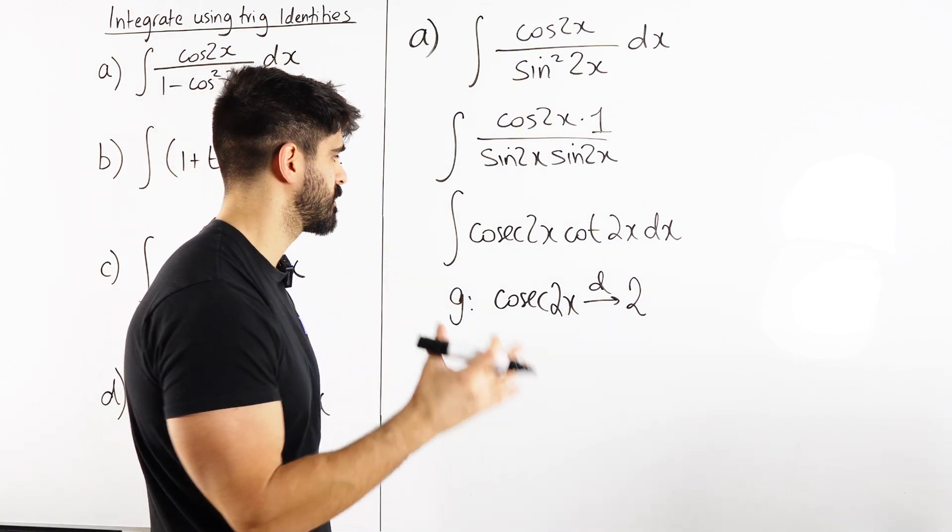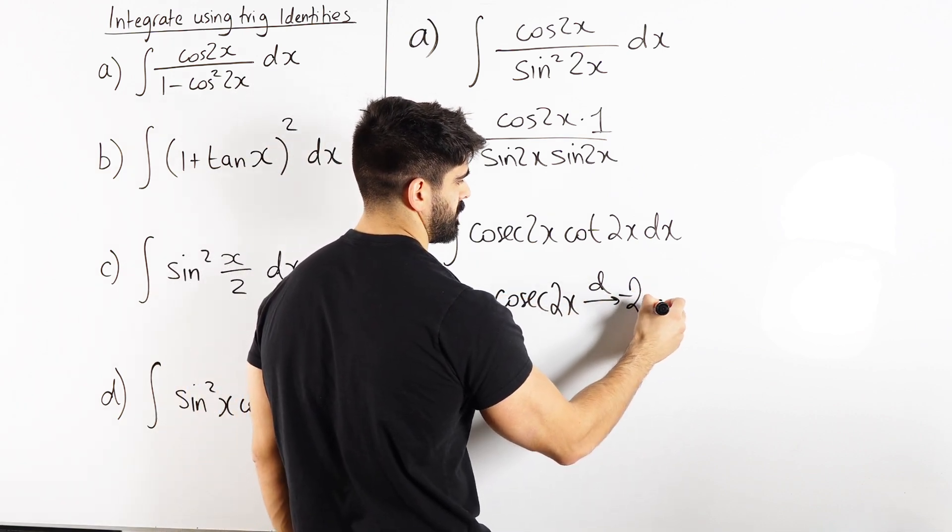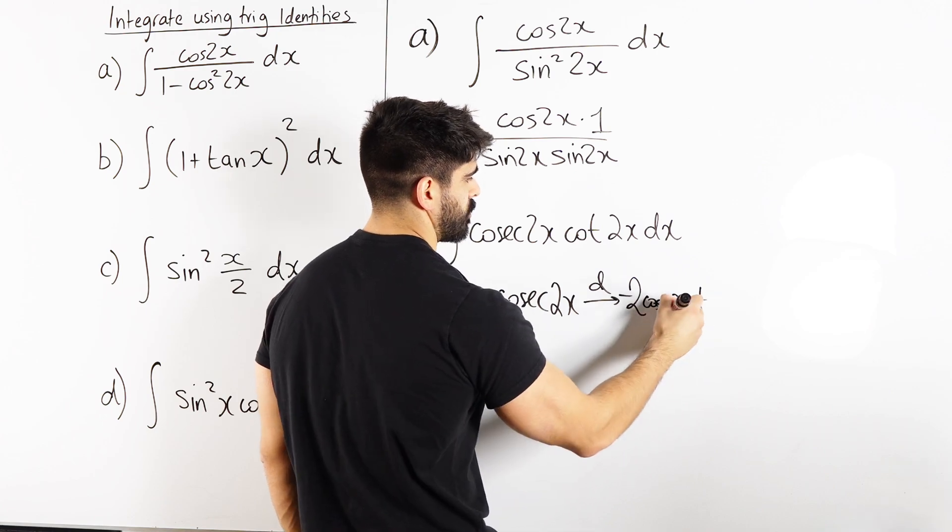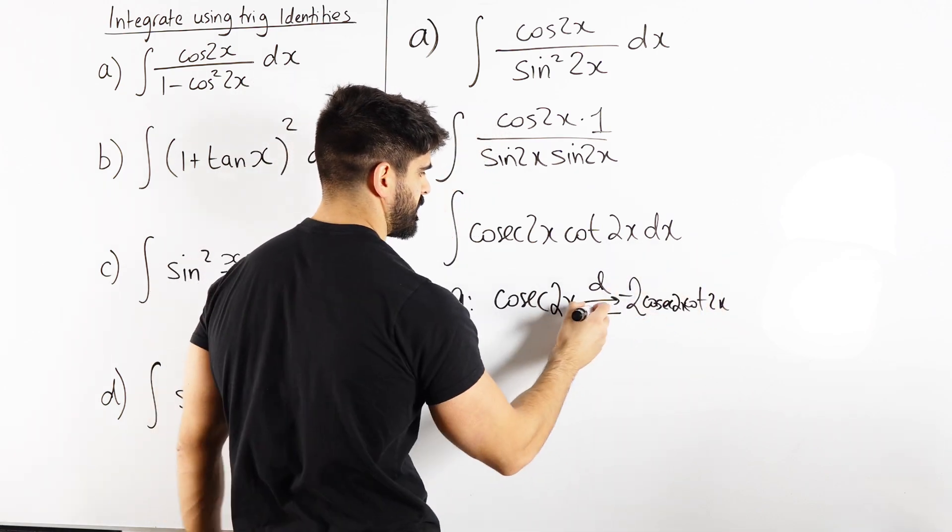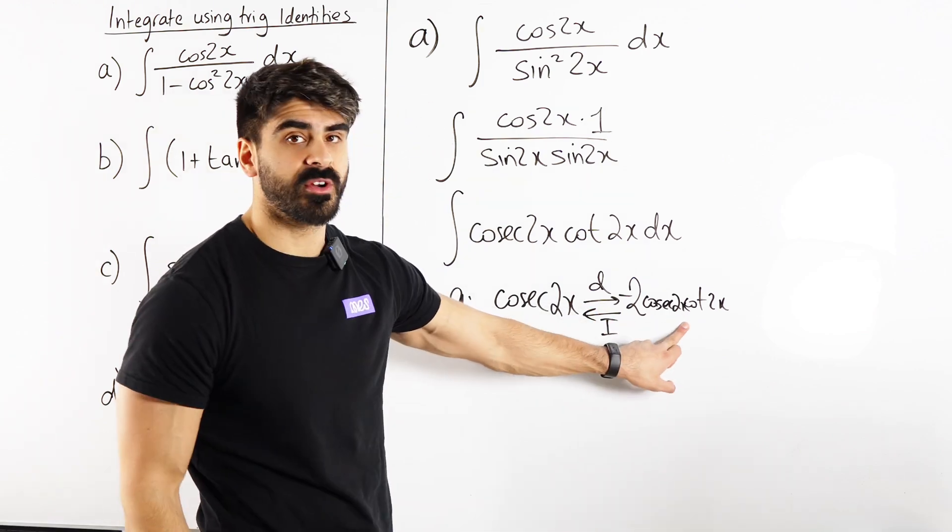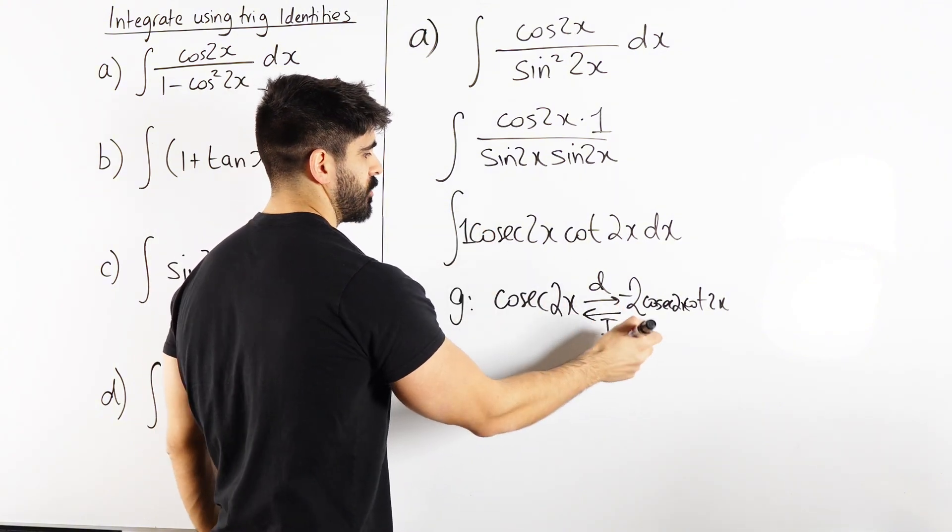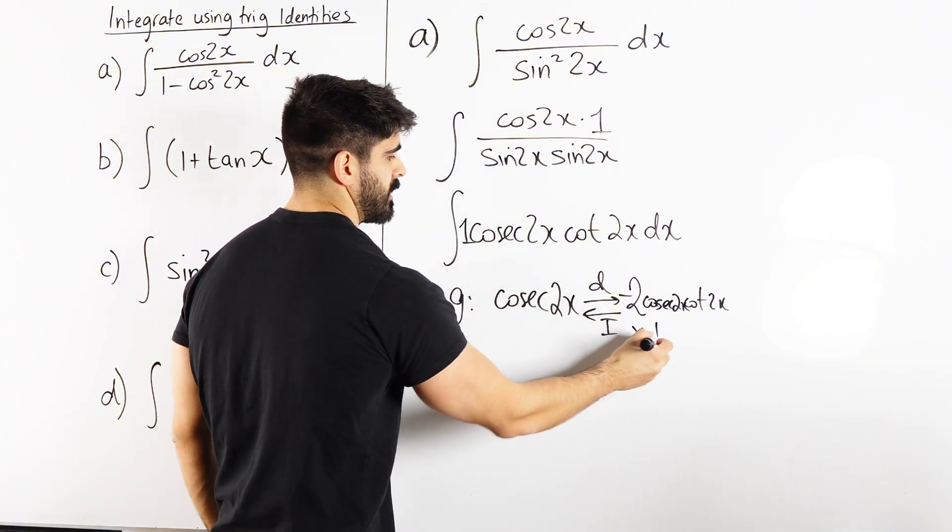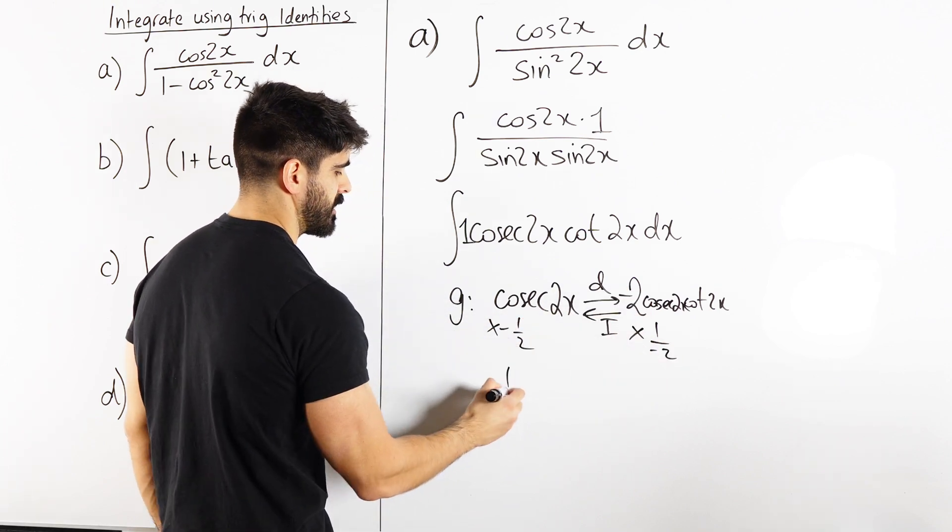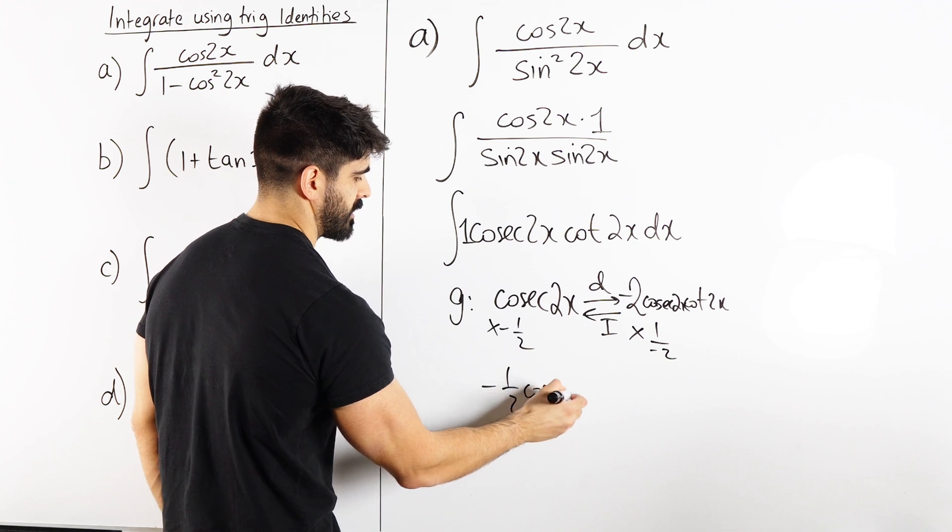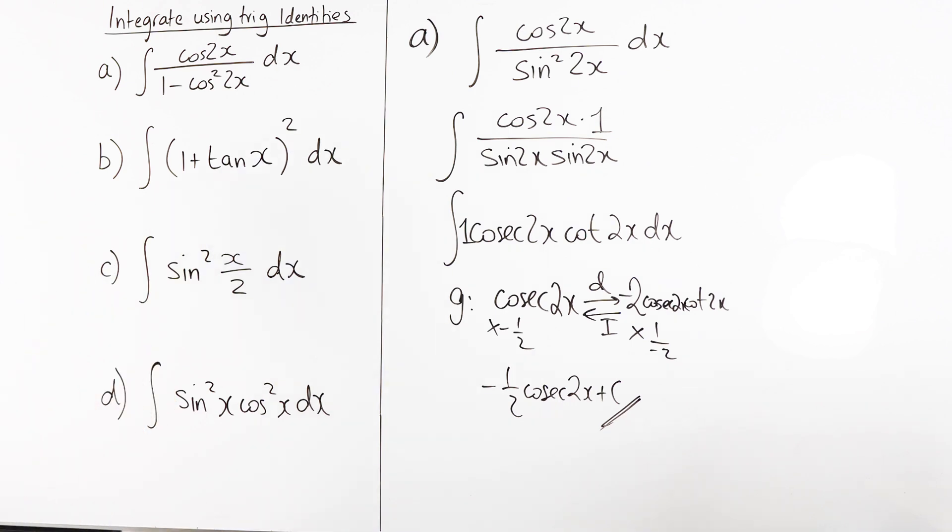Cosec goes to minus cosec times cosec times cot, and the angle has to stay the same. So this integrates back to this, but we don't want to integrate this. We just wanted a 1. So the trick is what you want divided by what you have. We're going to times by 1 divided by what we have, minus 2. So we times by minus a half, and there's our answer. Minus a half cosec 2x plus c. That's part A done.